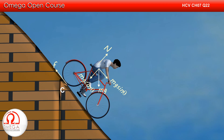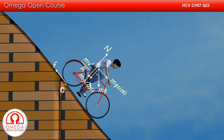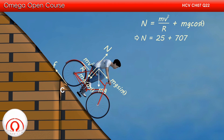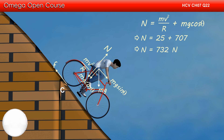As the cycle crosses point C, it is now moving on a circle whose center is upward, so the centrifugal force will now act downwards. Directions of the rest of the forces remain unchanged. Balancing the forces in the radial direction: N equals Mv²/R plus Mg cosθ = 25 + 707 = 732 N. Thus, just before point C the normal contact force is 682 N, and just after C it is 732 N. This is the answer to part C.